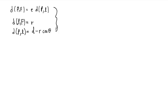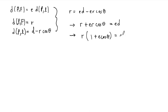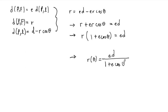Putting this all together, we get R equals E times D minus E·R·cosine(θ). Grouping the R terms gives R plus E·R·cosine(θ) equals E·D. Factoring out R, we get R times (1 plus E·cosine(θ)) equals E·D. Dividing through, our formula for the conic section is R(θ) equals E·D over (1 plus E·cosine(θ)).